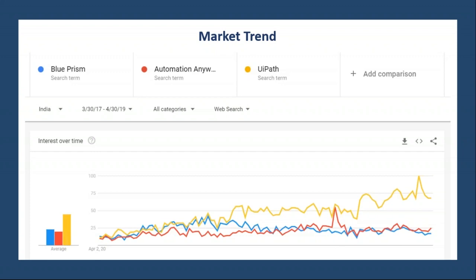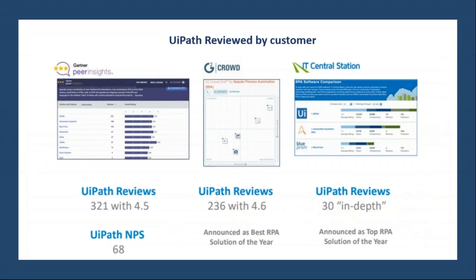Now we know the three leading products — UiPath, Automation Anywhere, and Blue Prism. Looking at market trends over the years: Blue Prism was initially leading, while UiPath and Automation Anywhere were giving tough competition. Over time, UiPath started very low compared to the other two but is now the top-leading platform, due to its user interface, integration capability, and performance.